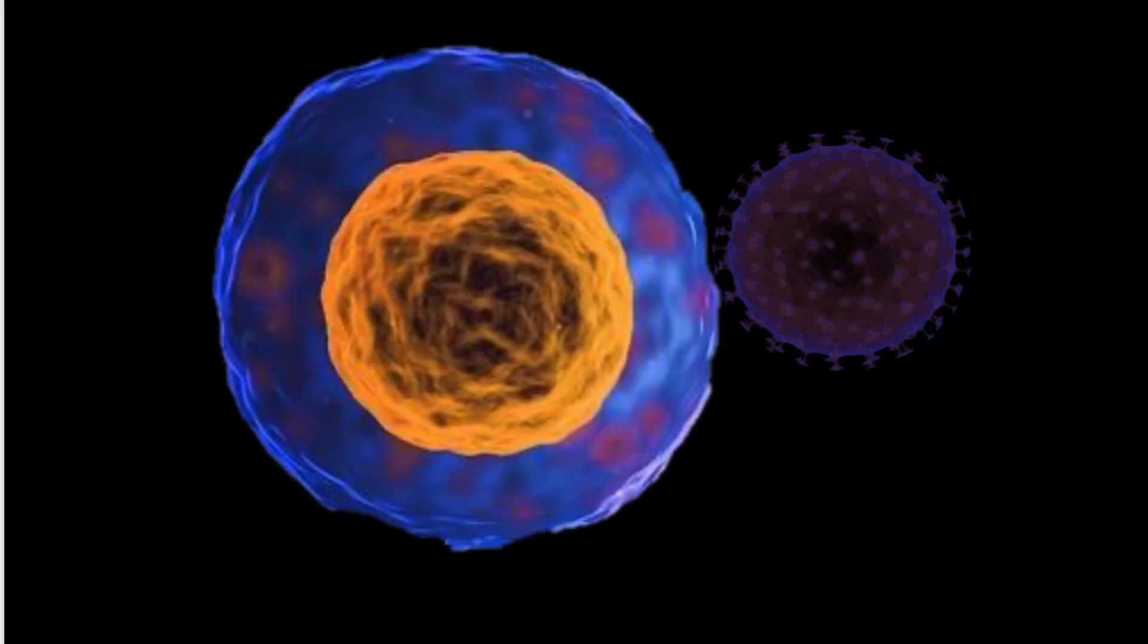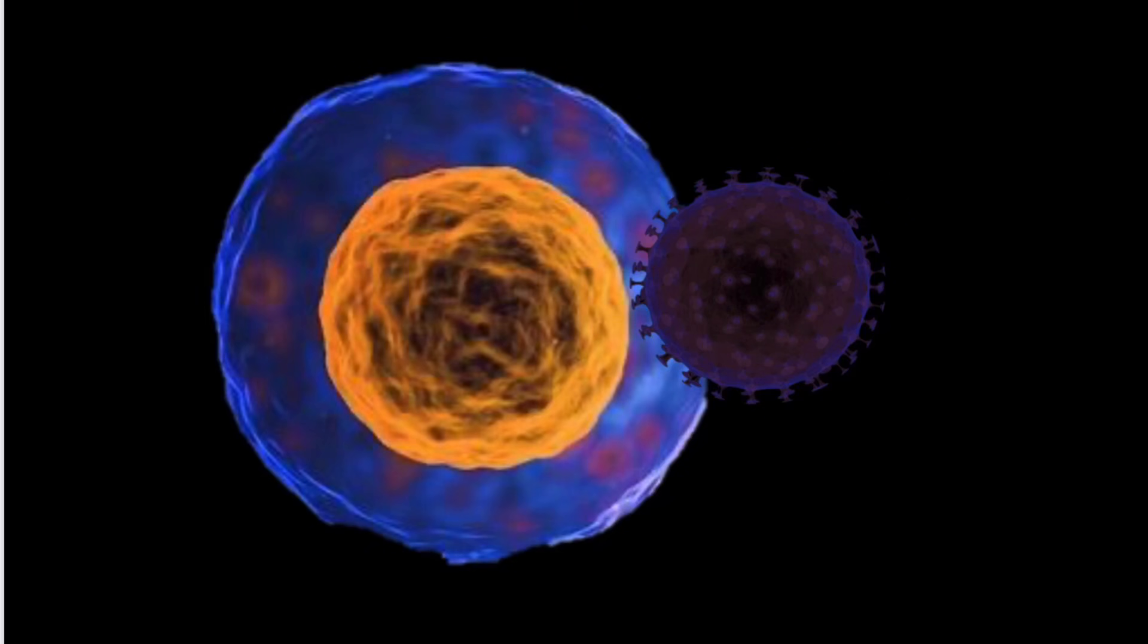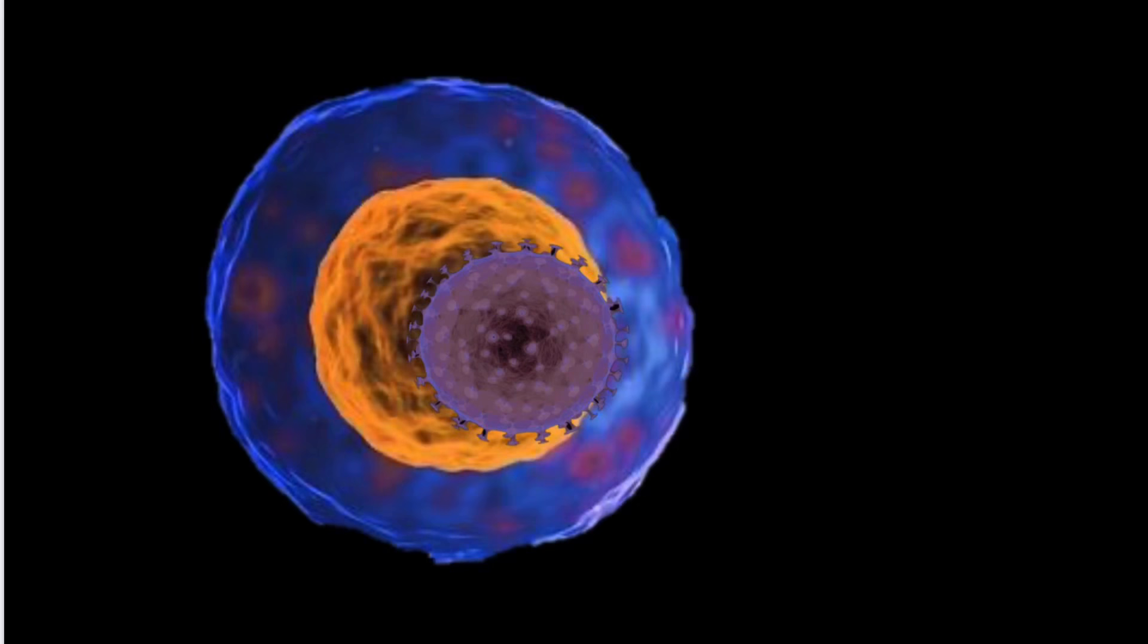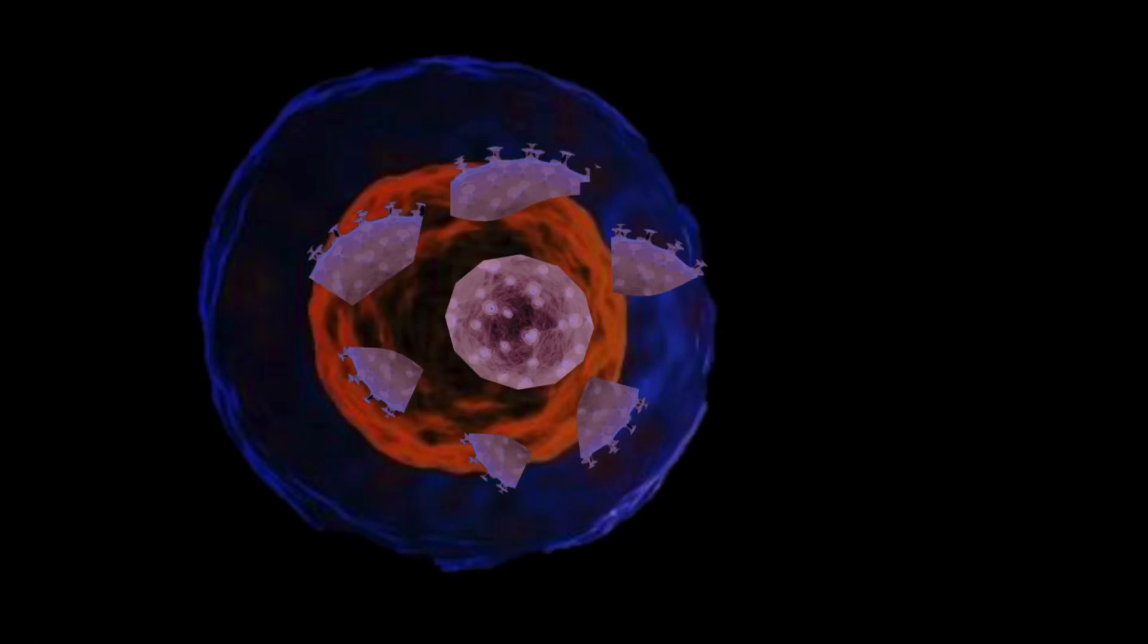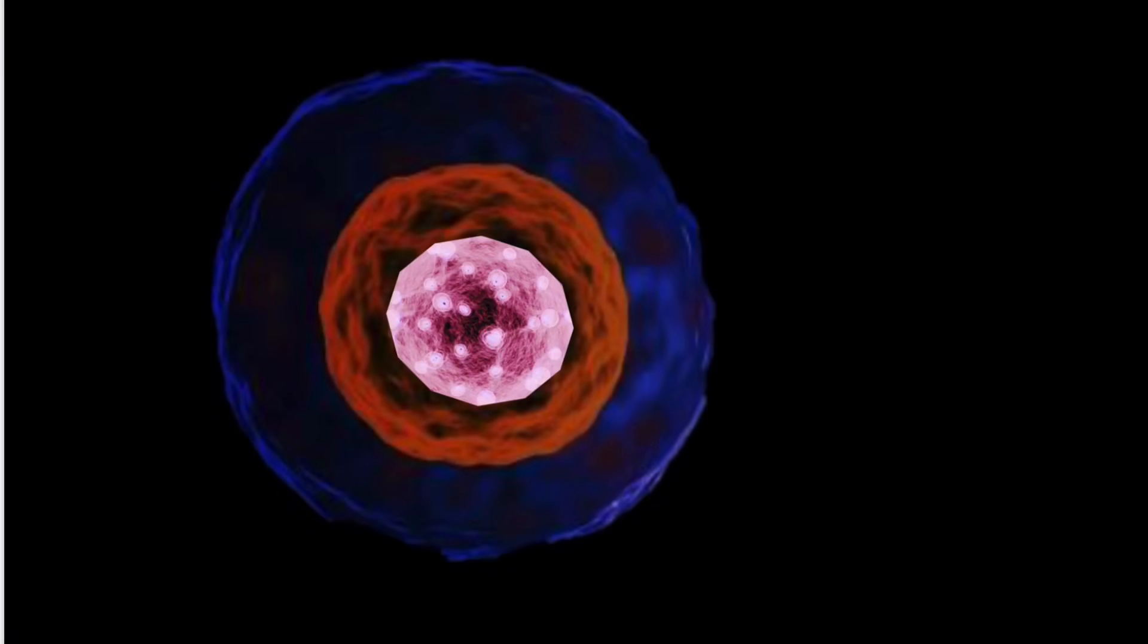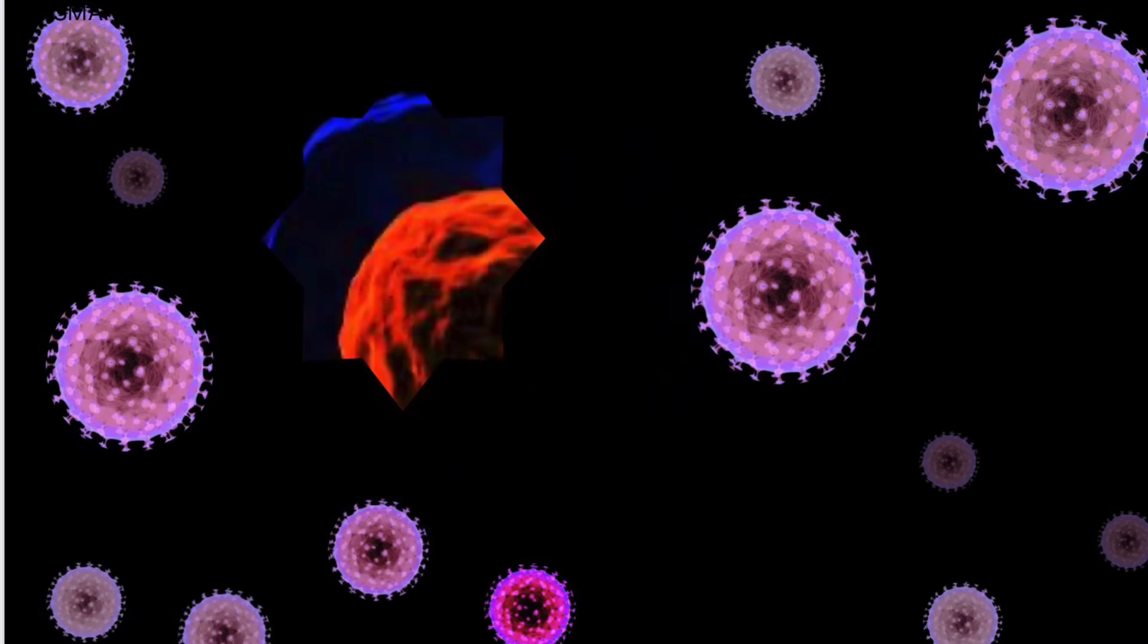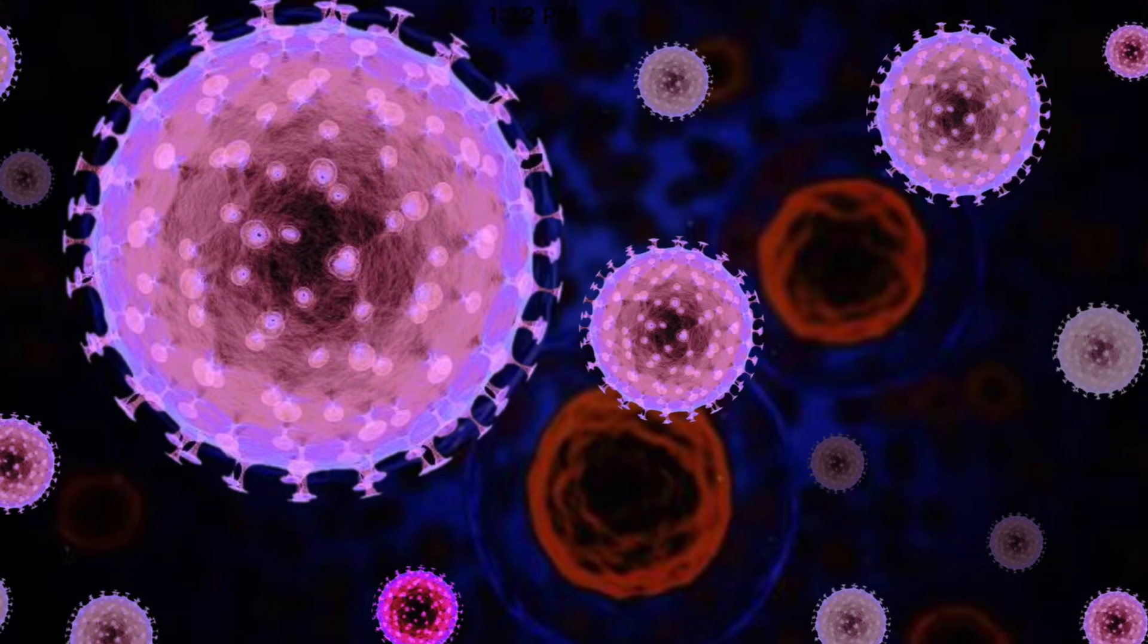As soon as virion enters a cell of a living form, now a virus, it exposes its genes as it sheds its coat and commands the cell's replication system to reproduce its DNA or RNA and protein. More viruses are born which will then go into other cells.